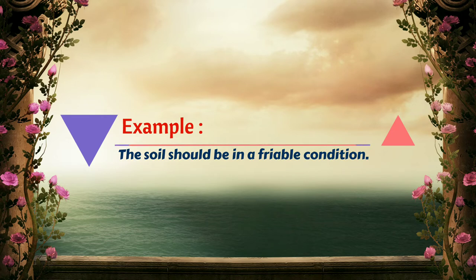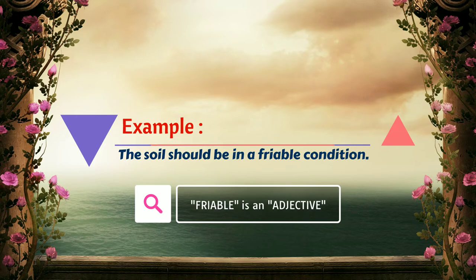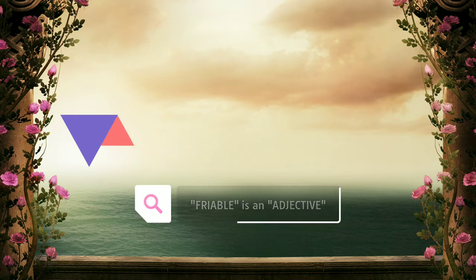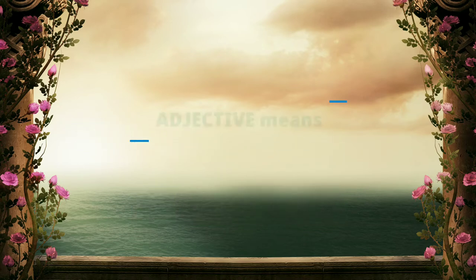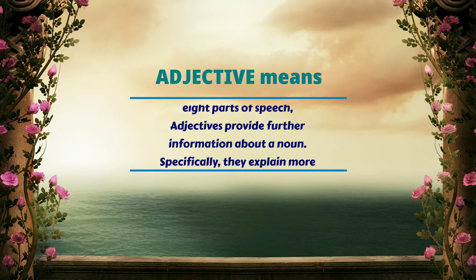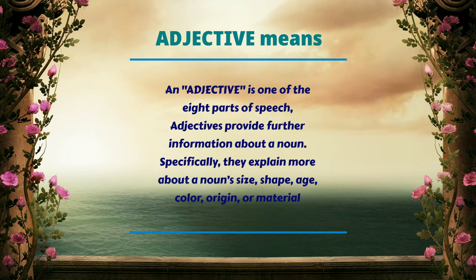Example: the soil should be in a friable condition. Here, friable is an adjective. An adjective is one of the eight parts of speech. Adjectives provide further information about a noun — specifically, they explain more about a noun's size, shape, age, color, origin, or material.